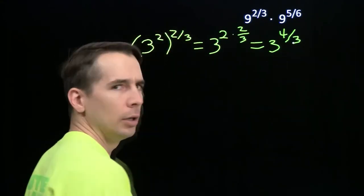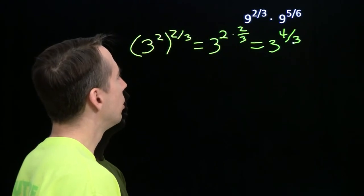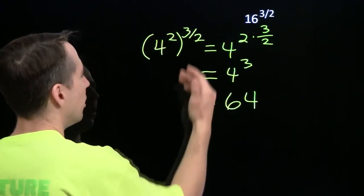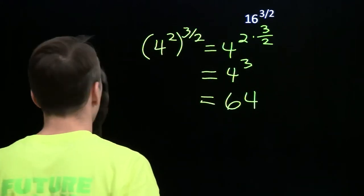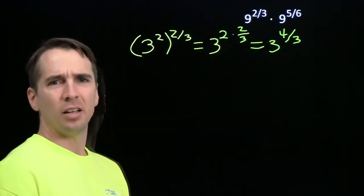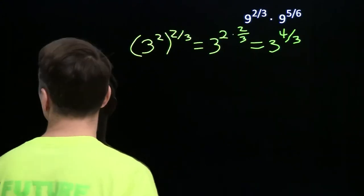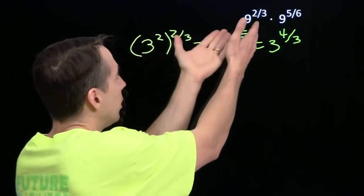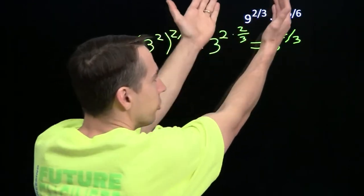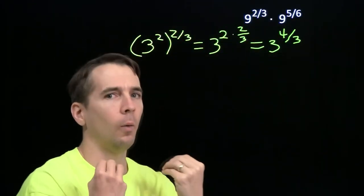Uh-oh. That didn't help. I mean, this came out to a nice number, a nice whole number. This is not a nice whole number. Well, I guess a few things to learn here. First of all, they don't always come out to nice whole numbers. You know, 9 to the 2 thirds is not a whole number.